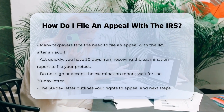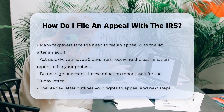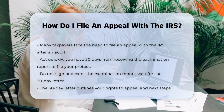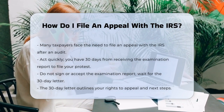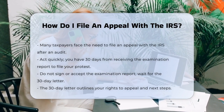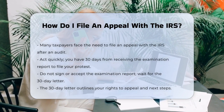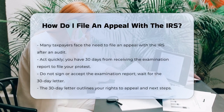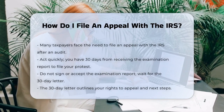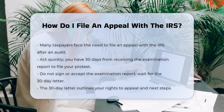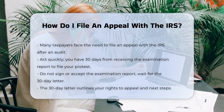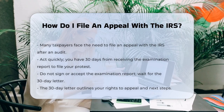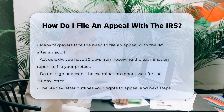To start the appeal process, you should not sign or accept the examination report. Instead, you'll receive a 30-day letter explaining your rights to appeal. This letter will tell you how to proceed. Your formal protest is a written statement explaining why you disagree with the IRS's findings.